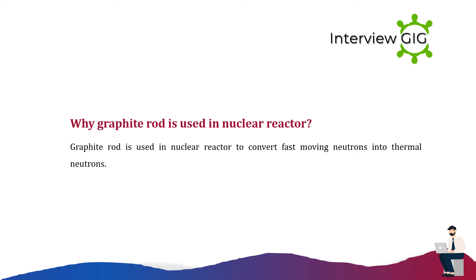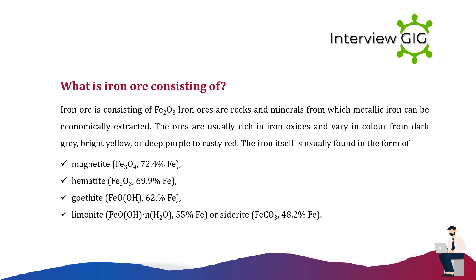What does iron ore consist of? Iron ore consists of iron(III) oxide. Iron ores are rocks and minerals from which metallic iron can be economically extracted. The ores are usually rich in iron oxides and vary in color from dark gray, bright yellow, or deep purple to rusty red. Iron itself is usually found in the form of magnetite (Fe₃O₄).